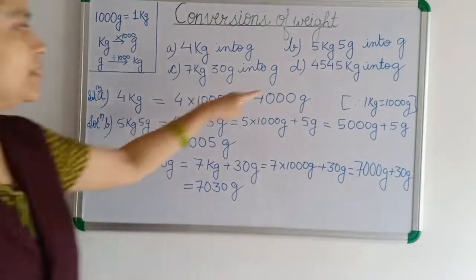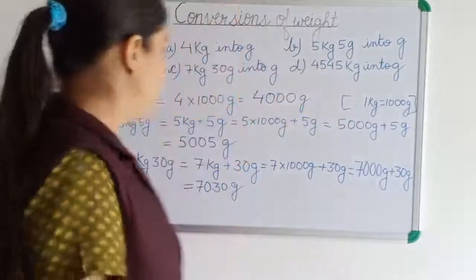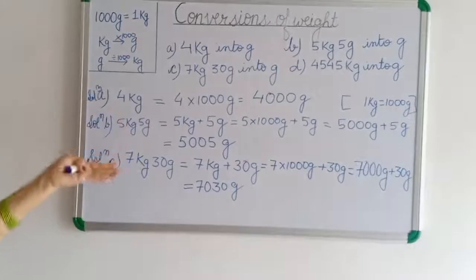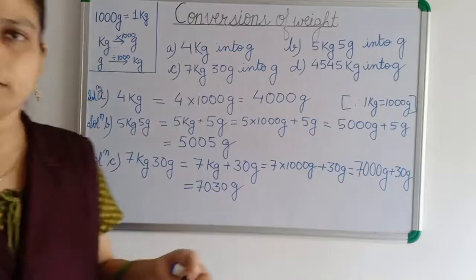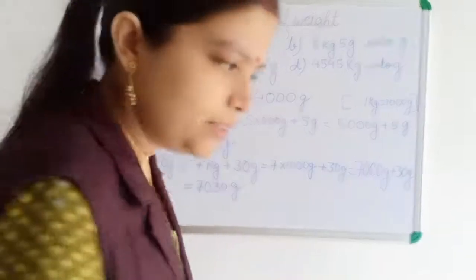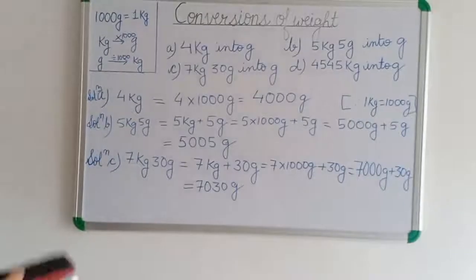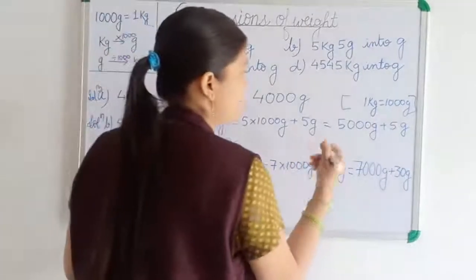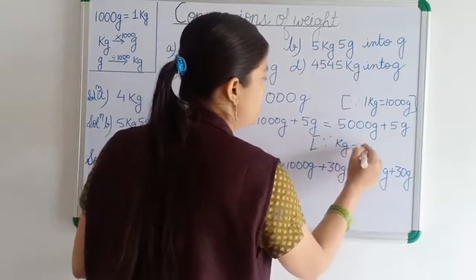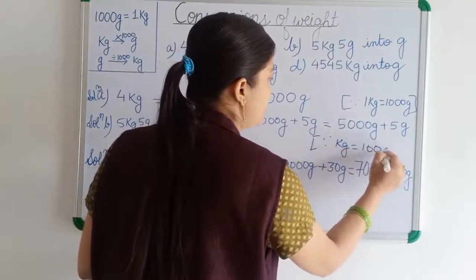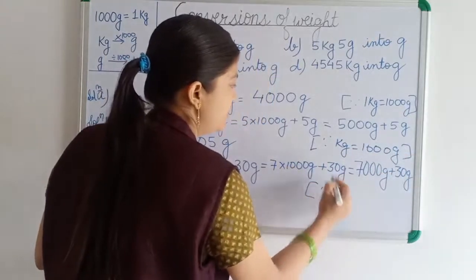Now last, let's discuss this. When converting kg into gram, we multiply. When converting gram into kg, we are dividing. In each case, you have to write: 1 kg is equal to 1000 gram. You have to show this in the corner, in a bracket, when you are solving.